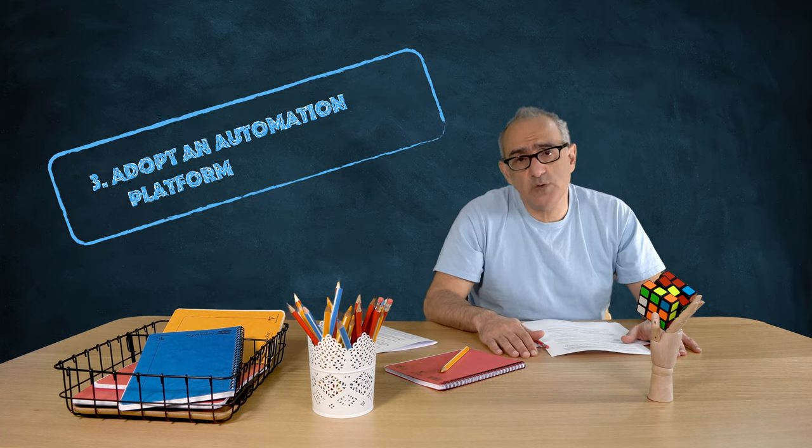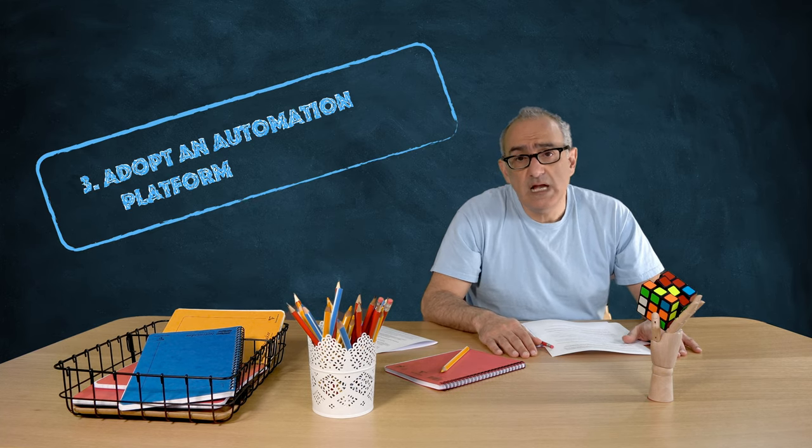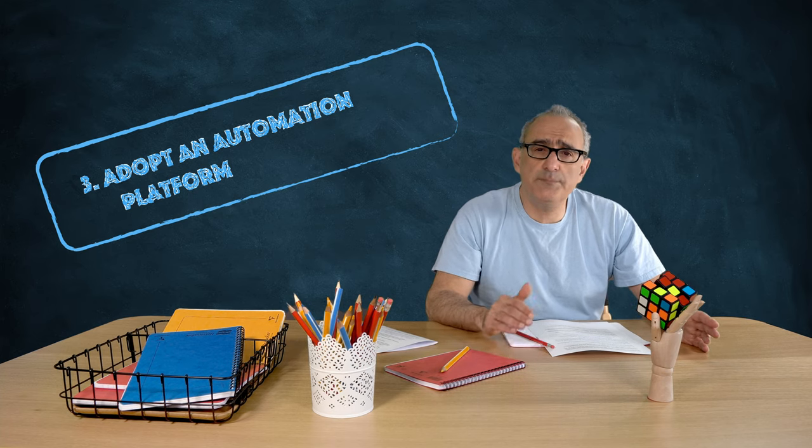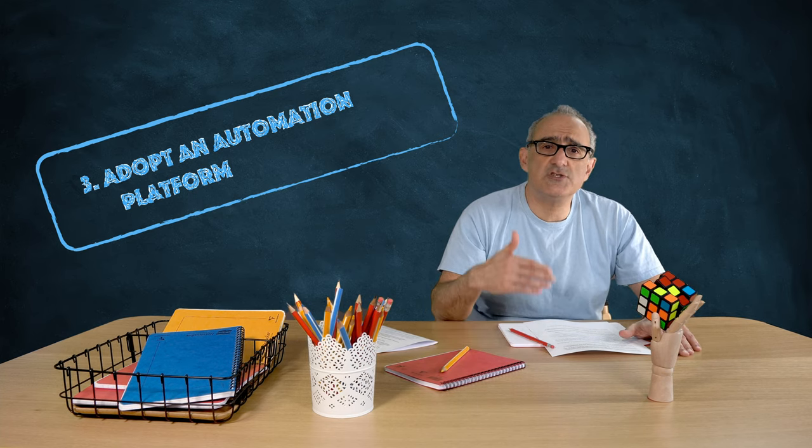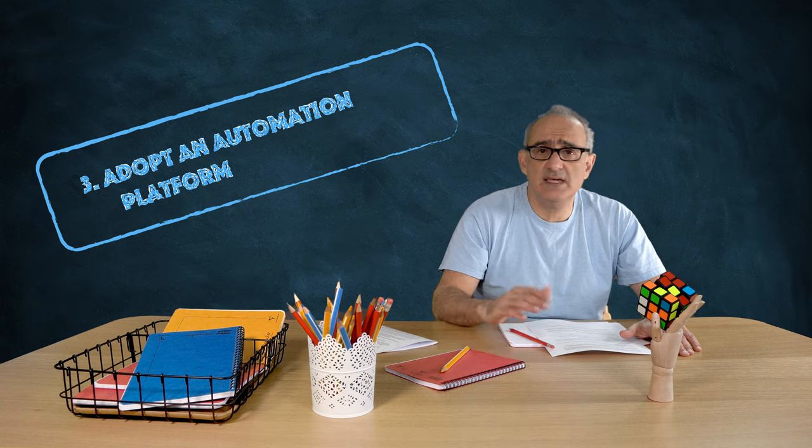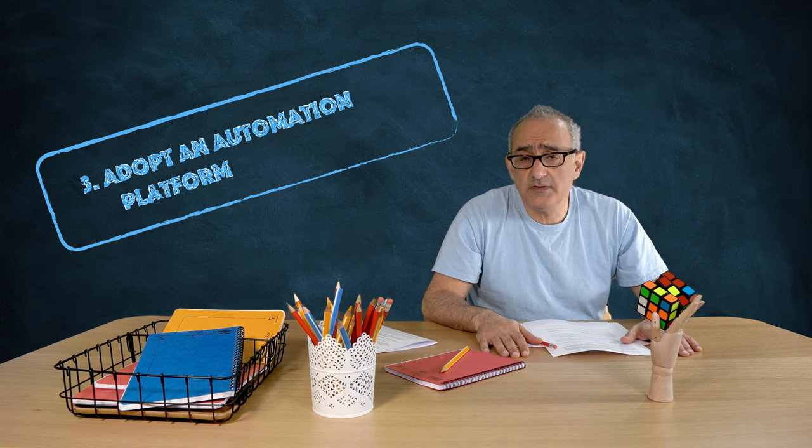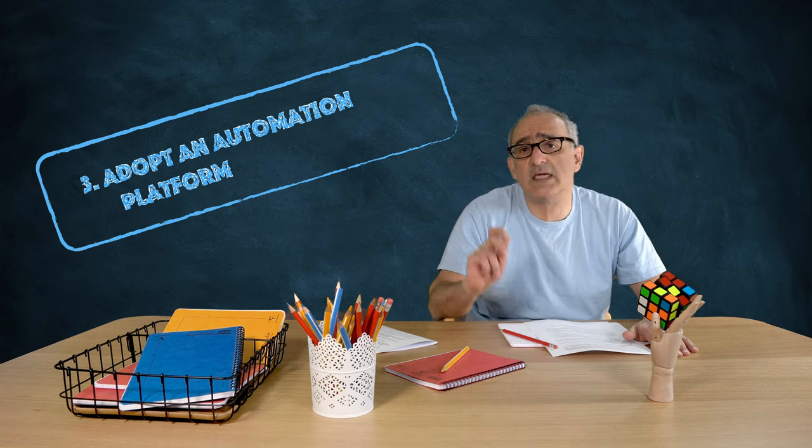Number three, adopt an automation platform. Historically, organisations have been poor at adopting a strategy for automation that caters for all their needs. There are lots of reasons for that. Let's take a quick look at them.